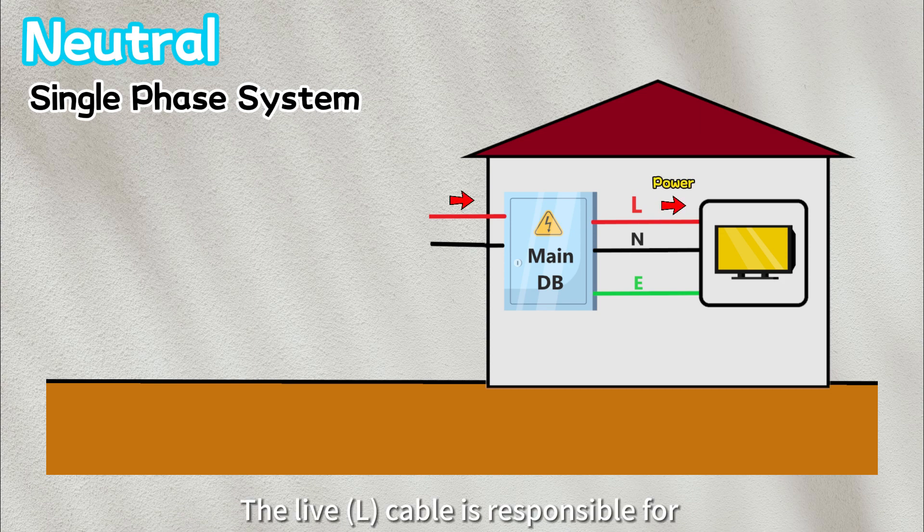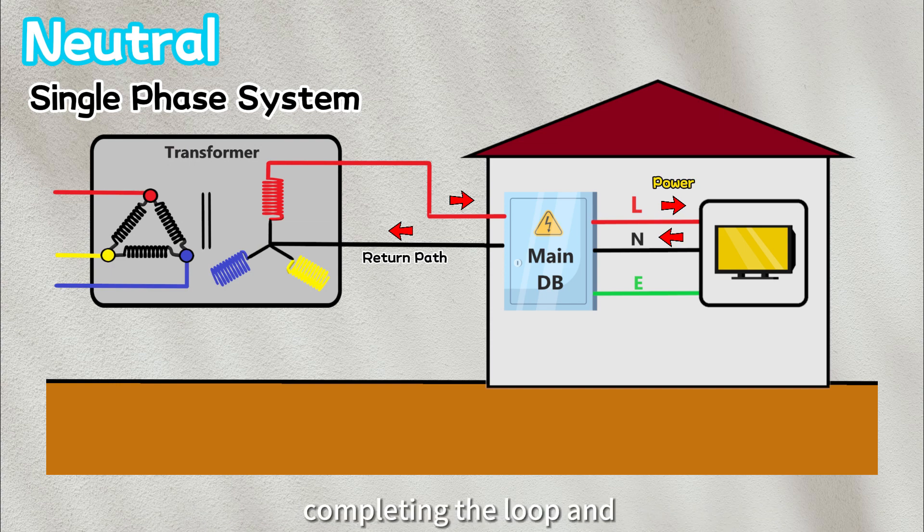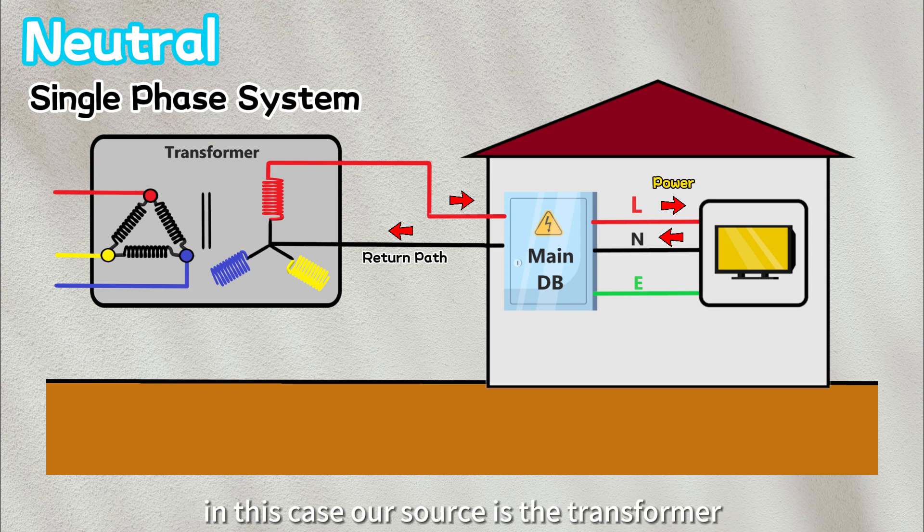The live cable is responsible for delivering power to our devices, and the neutral cable serves as the return path for the electrical circuit, completing the loop, and allowing the current to flow back to its source. In this case, our source is the transformer.